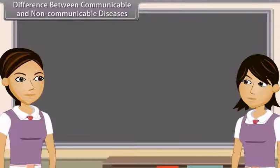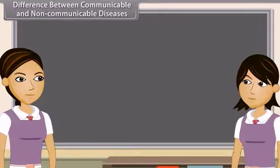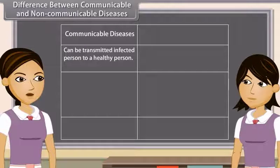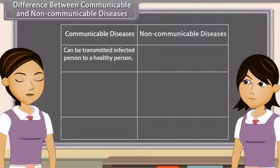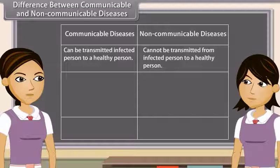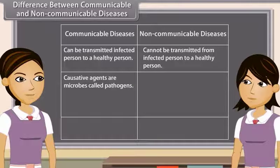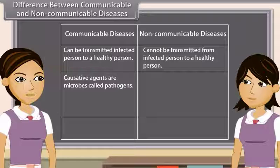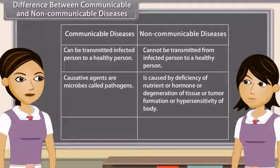Difference between communicable and non-communicable diseases: Communicable diseases can be transmitted from an infected person to a healthy person, while non-communicable diseases cannot be transmitted. Communicable diseases are caused by microbes called pathogens. Non-communicable diseases are caused by deficiency of a nutrient or hormone, degeneration of tissue, tumour formation, or hypersensitivity of the body.